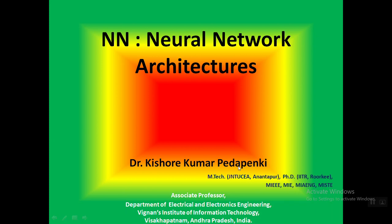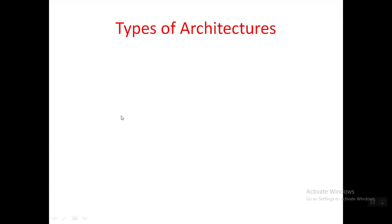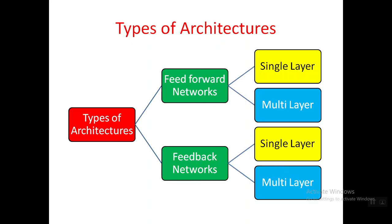Today let's discuss neural network architectures — how many types are there, how neural networks are framed to get proper output, and what is the significance of so many layers. Basically, there are two types of architectures: feed forward networks and feedback networks.